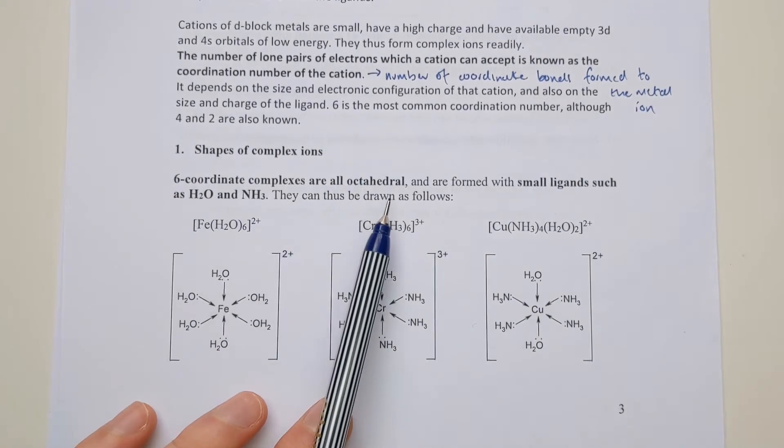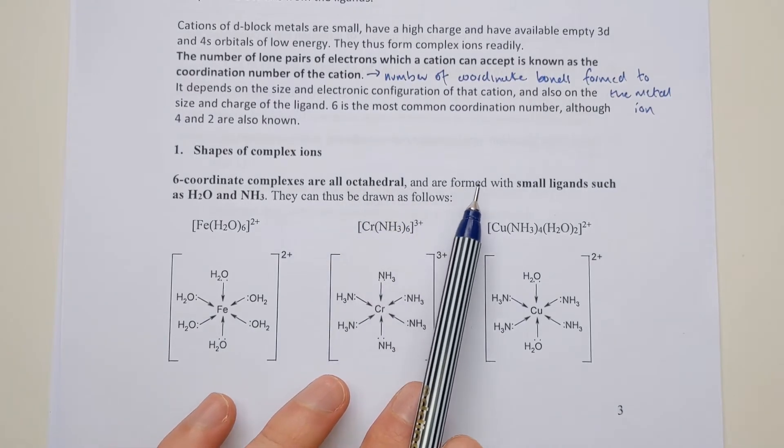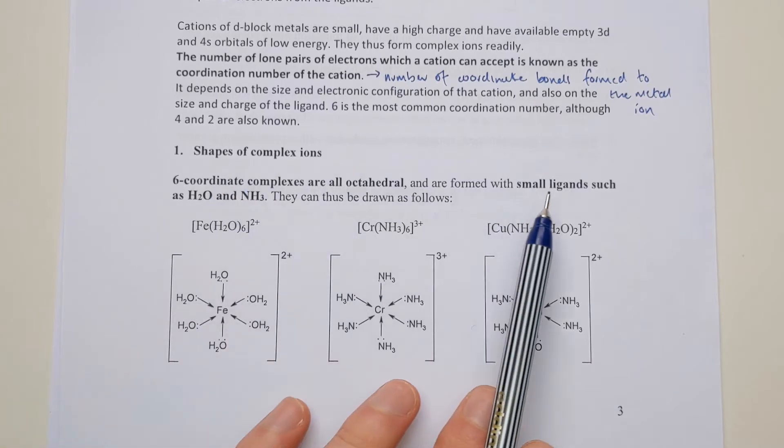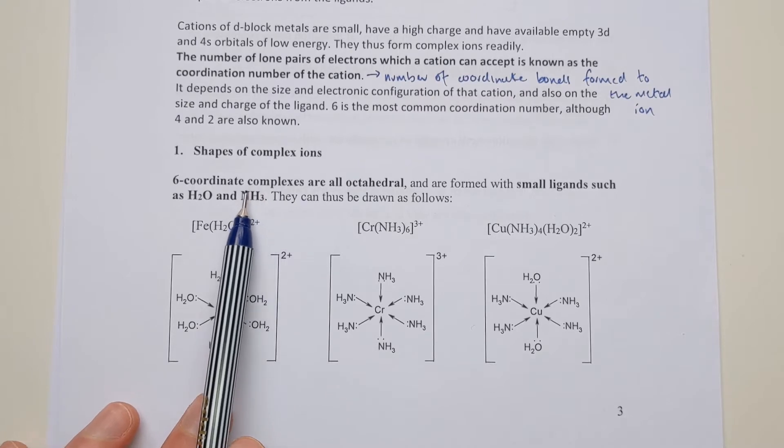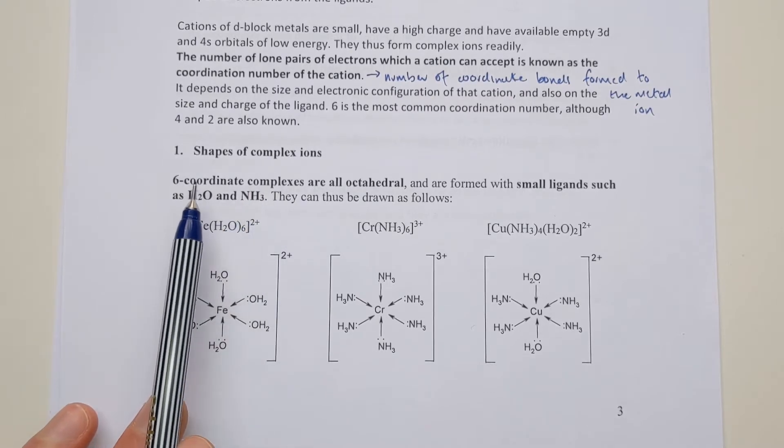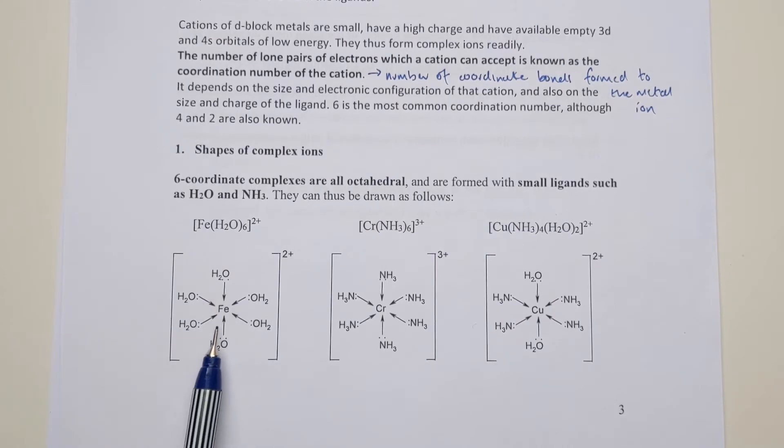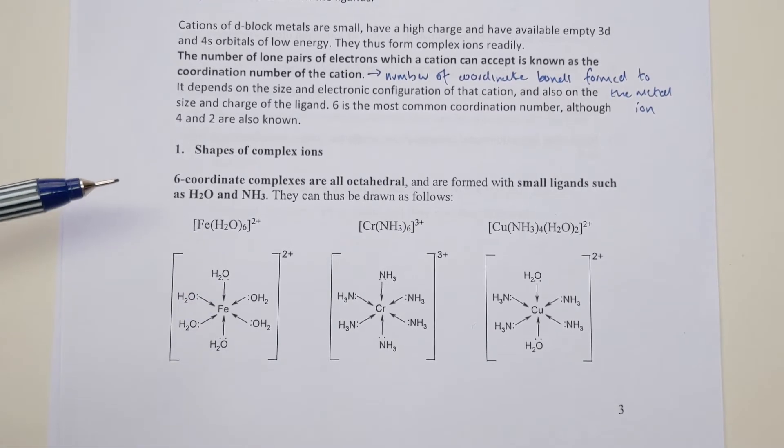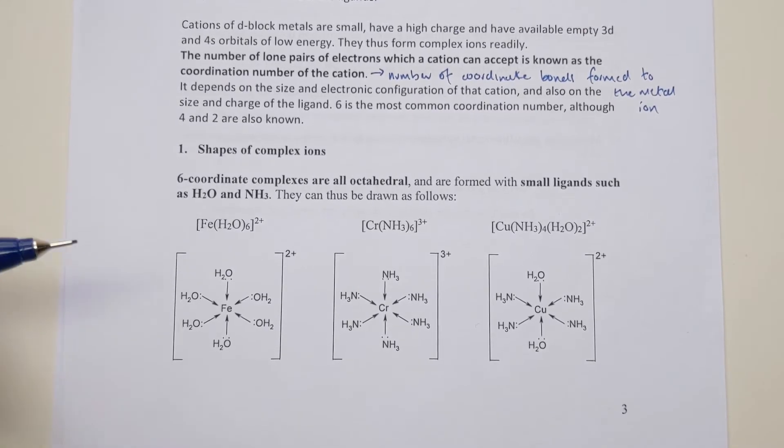Six coordinate complexes are all octahedral. Generally, you'll find six coordinate complexes with coordination number six if you've got very small ligands. Molecules like water and ammonia all contain elements in the first and second periods of the periodic table. They're all quite small atoms, therefore you can fit quite a lot of these molecules around a central atom before they get too crowded. The more bonds you form, the more energy. So if you can fit six around, it's going to get a lot more stability than four or two.